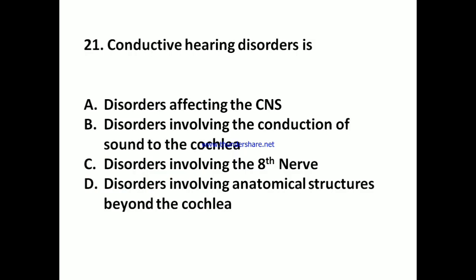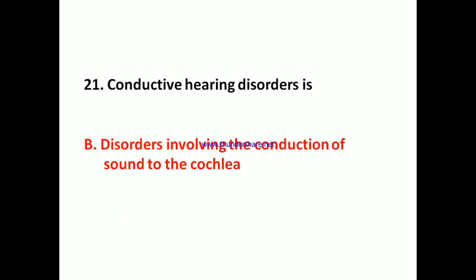Question 21: Conductive hearing disorders are: A) Disorders affecting the CNS, B) Disorders involving the conduction of sound to the cochlea, C) Disorders involving the eighth nerve, D) Disorders involving anatomical structures beyond the cochlea. Answer: B) Disorders involving the conduction of sound to the cochlea.